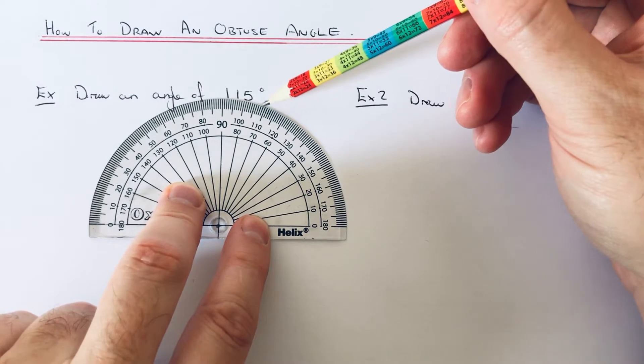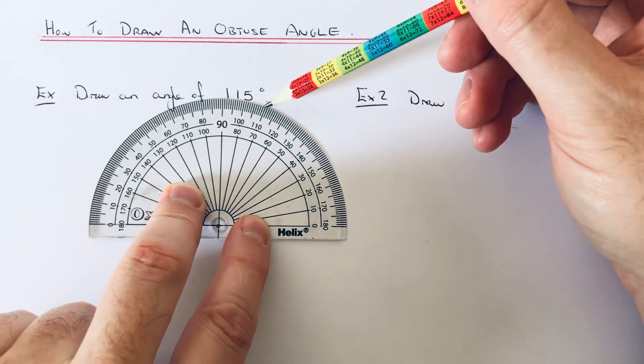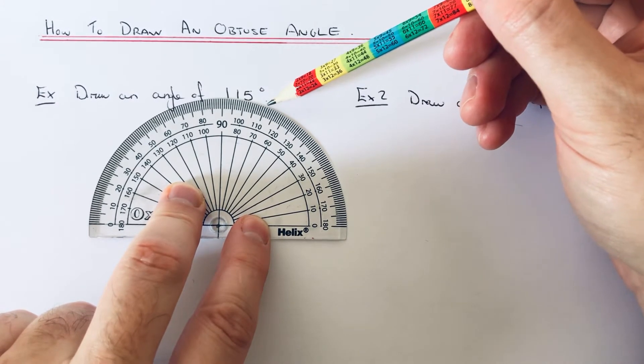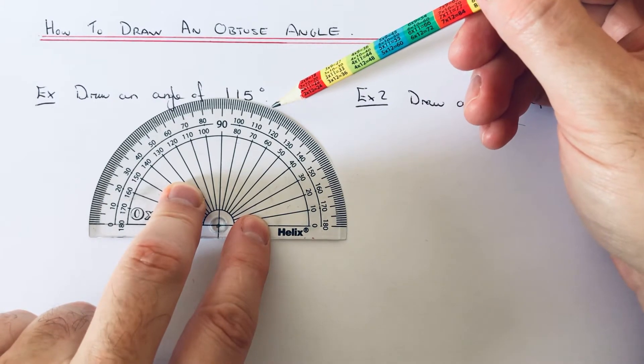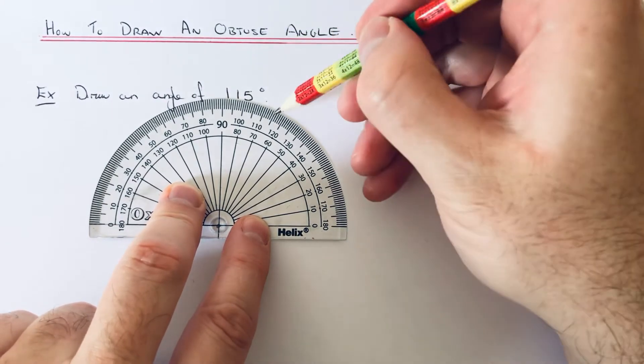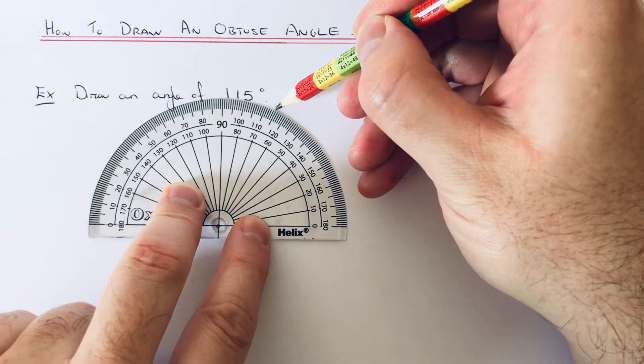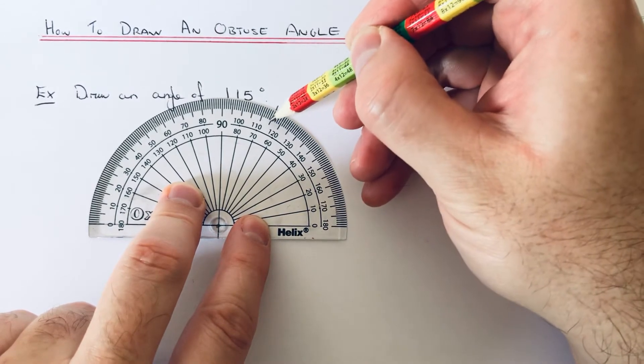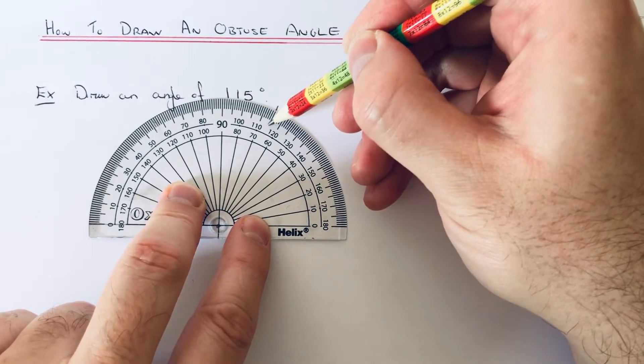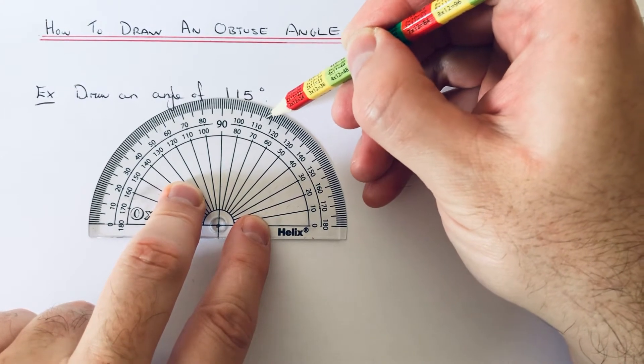111, 112, 113, 114, 115. So put a little dot there. You can see the halfway point as well because it's a little bit longer than the other ones.